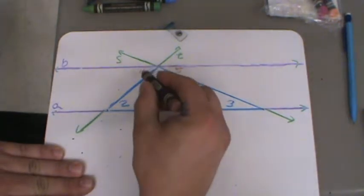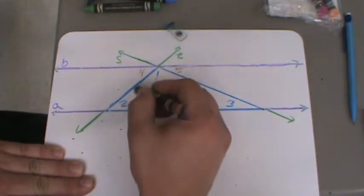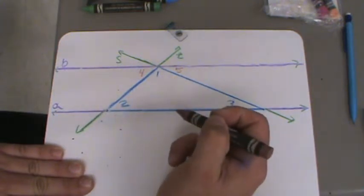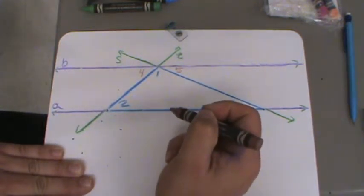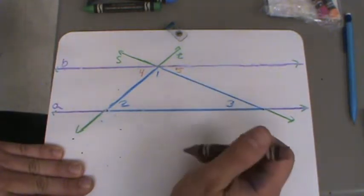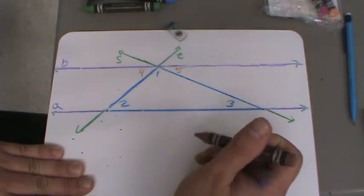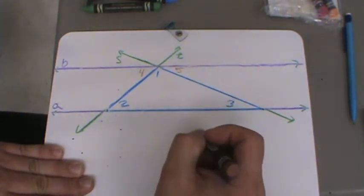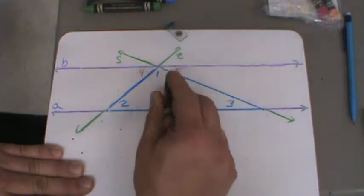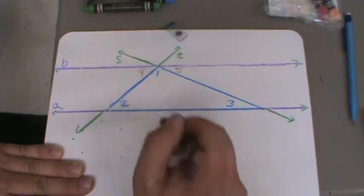Now, we know angle 2 and angle 4 are alternate interior angles, which means that they are congruent. And we know that angle 5 and angle 3 are also alternate interior angles, so those two form a congruent pair of angles. Which means that these two are equal and these two are equal.